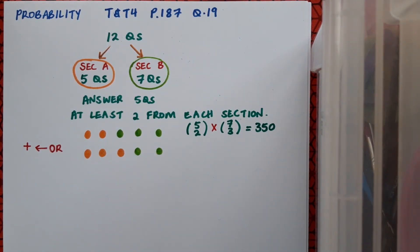So there are 350 ways of making that first choice—two from A and three from B. Now we have to do it for three from A and two from B. Pause the video here and give that one a shot yourself, then play and see if you're correct.